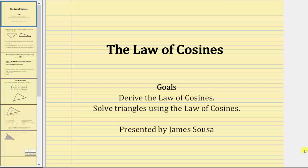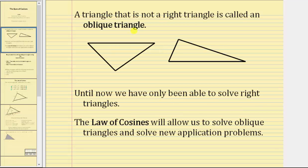Welcome to a lesson on the law of cosines. In this lesson, we will derive the law of cosines and also solve triangles using the law of cosines. A triangle that is not a right triangle is called an oblique triangle. Until now, we have only been able to solve right triangles. However, the law of cosines will allow us to solve oblique triangles and solve new application problems.